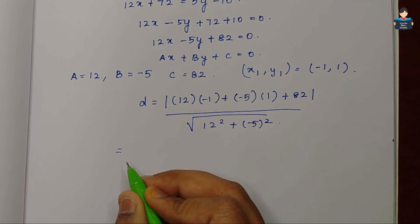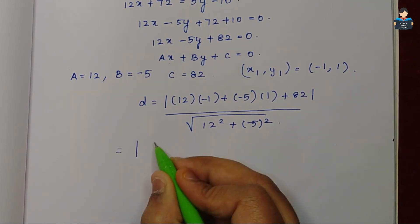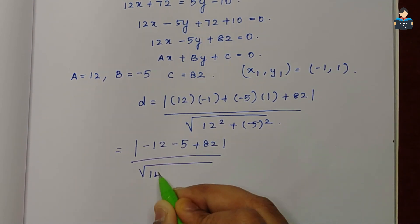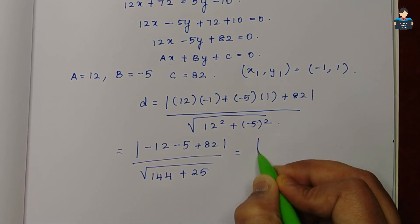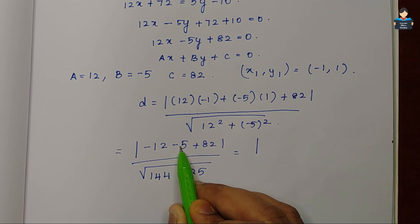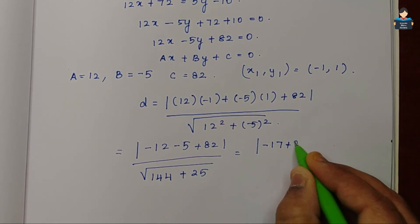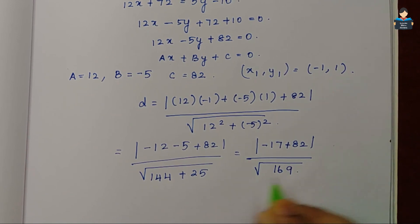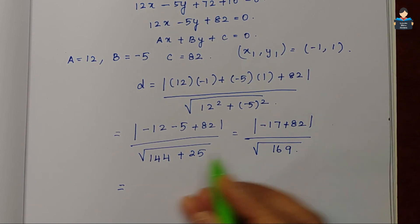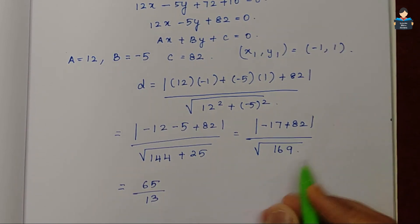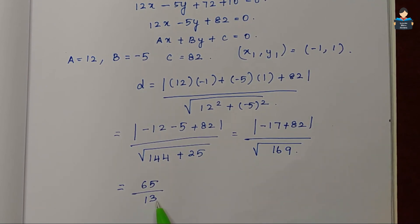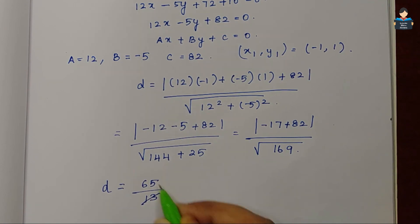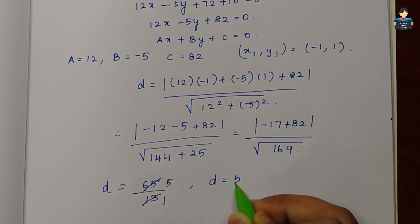So, இப்போ solve பண்றோம். நம்மளுக்கு என்ன கிடைக்கும்? Modulus of minus 12 minus 5 plus 82, by square root of 12 square 144 plus 25, வந்து வரும். Modulus of: first minus 12 minus 5 add பண்ணோமோட நம்மளுக்கு minus 17 வரும், plus 82 வந்து வரும், divided by square root of 169. So, minus 17 plus 82 is 65 by 13. 13 square is 169, square and square root cancel ஆகி நம்மளுக்கு 13 வந்து கிடைக்கும். So, அபட distance வந்து 65 by 13. இதை simplify பண்ணலாம்: 13 one time, 13 five times. So, அபட D வோட வந்து 5 units.